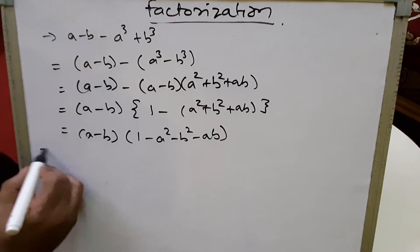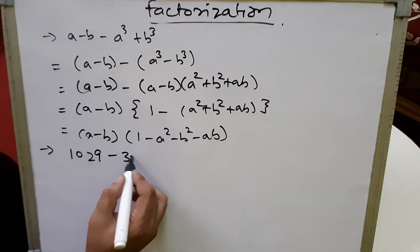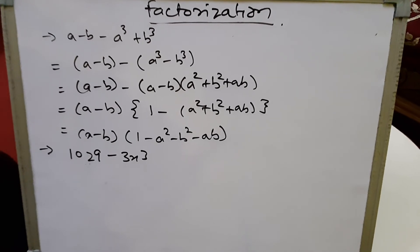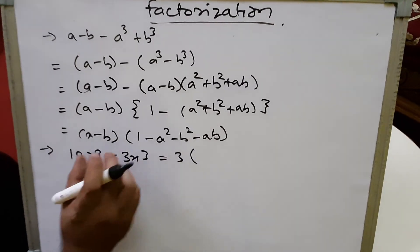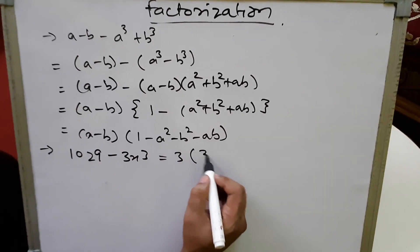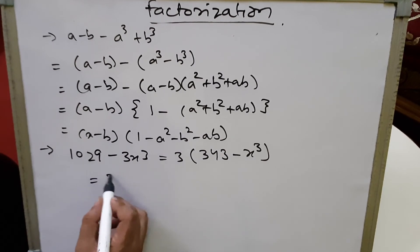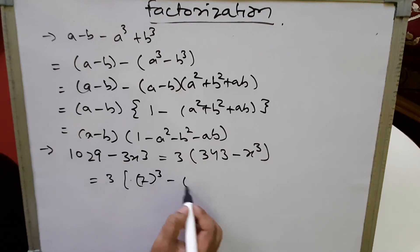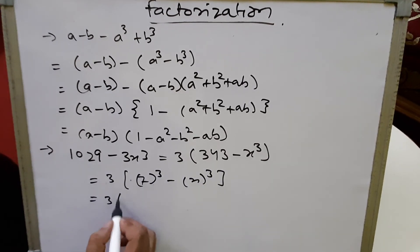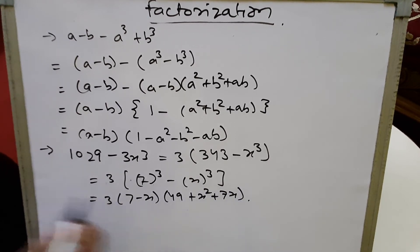Next sum involves 1079 - 1029, which simplifies to 3·343 - 3x³. We take 3 common: 3(343 - x³). Since 343 = 7³, this becomes 3(7³ - x³). Applying the difference of cubes formula: 3(7 - x)(49 + x² + 7x).